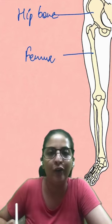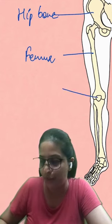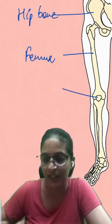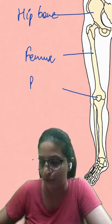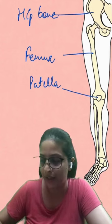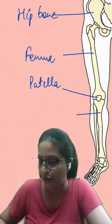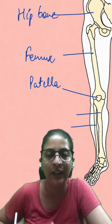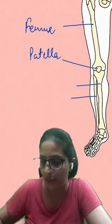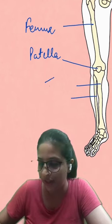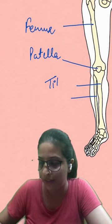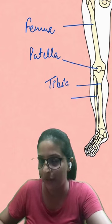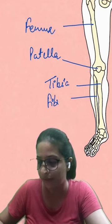Now after femur you have another bone which forms the knee cap and it is known as patella. After that you have two more bones, one the thicker one and the other one is the thinner one. The thicker one is known as tibia and the thinner one is known as fibula.